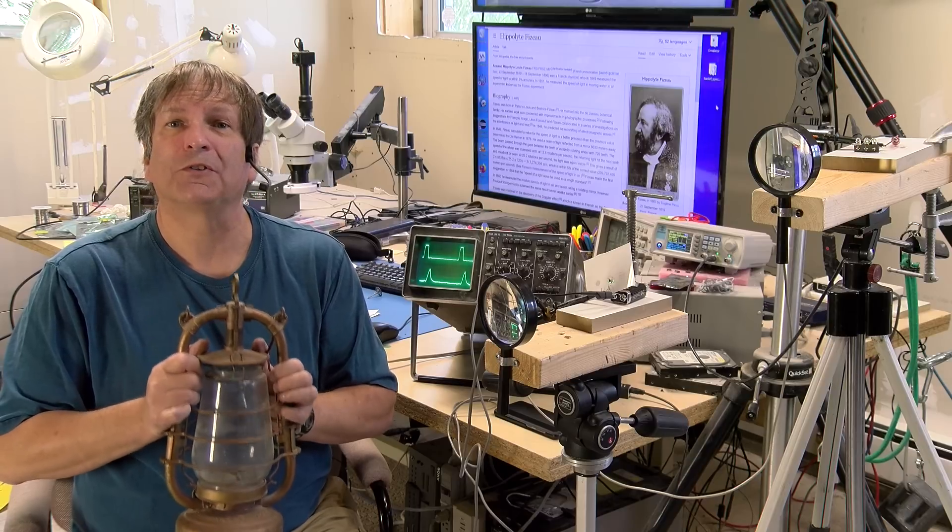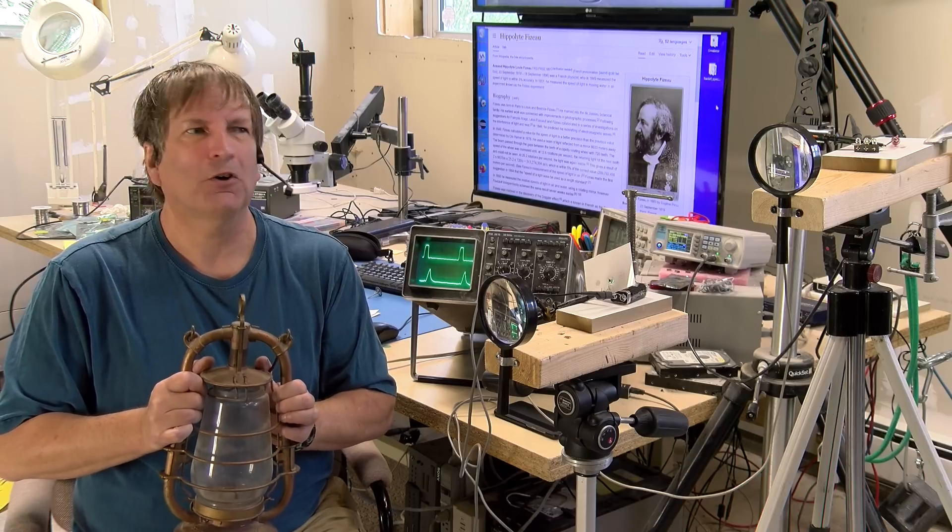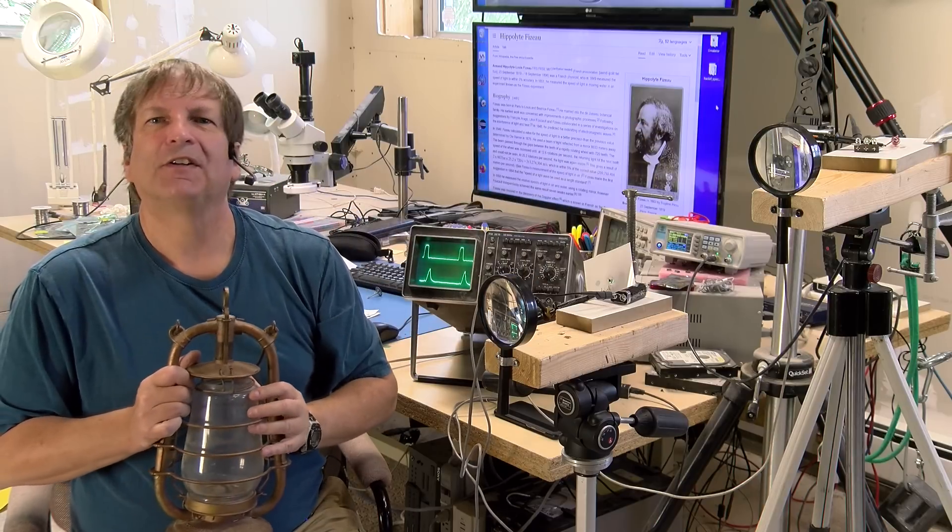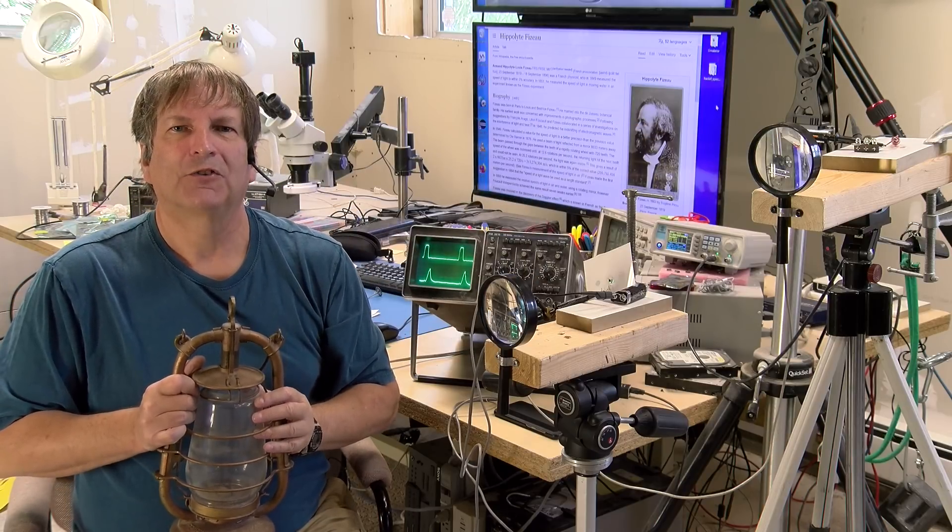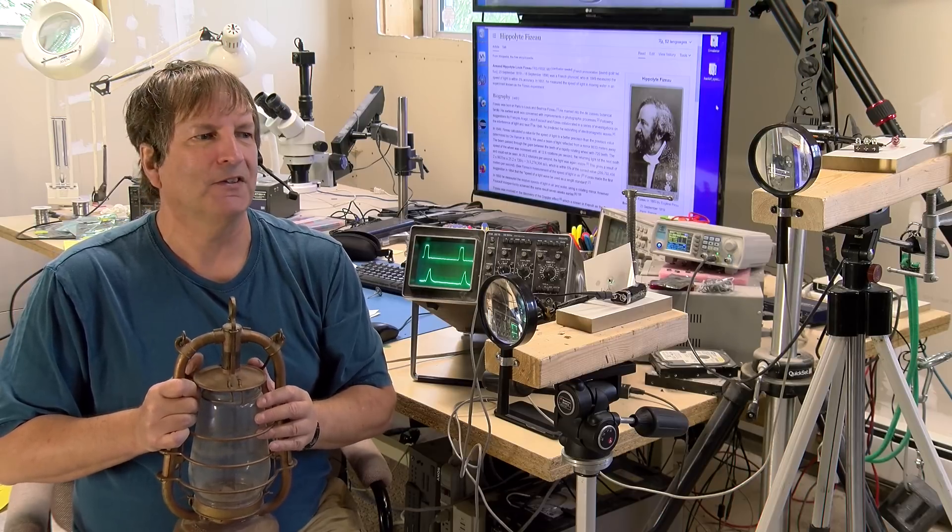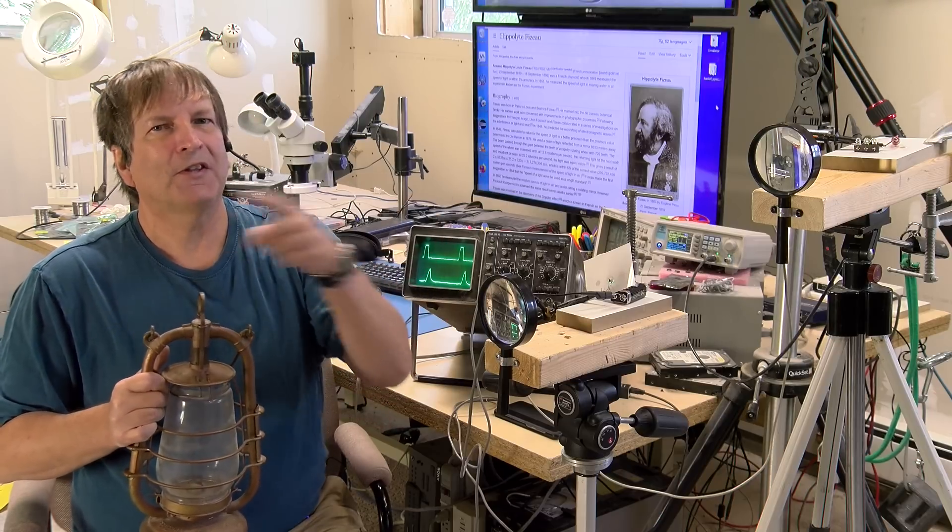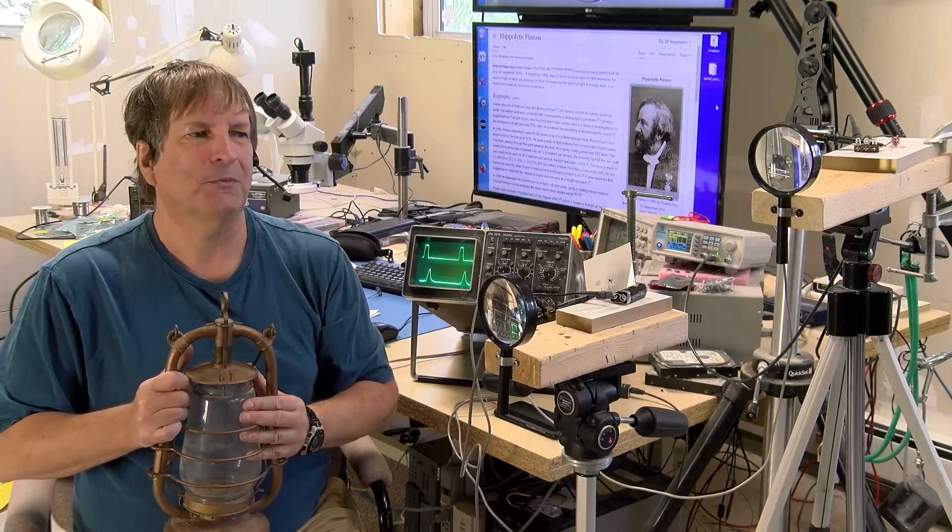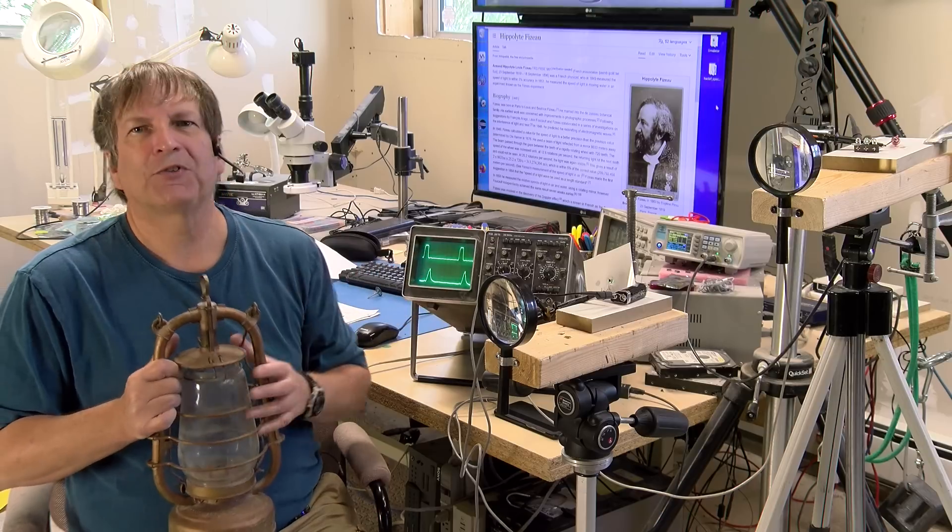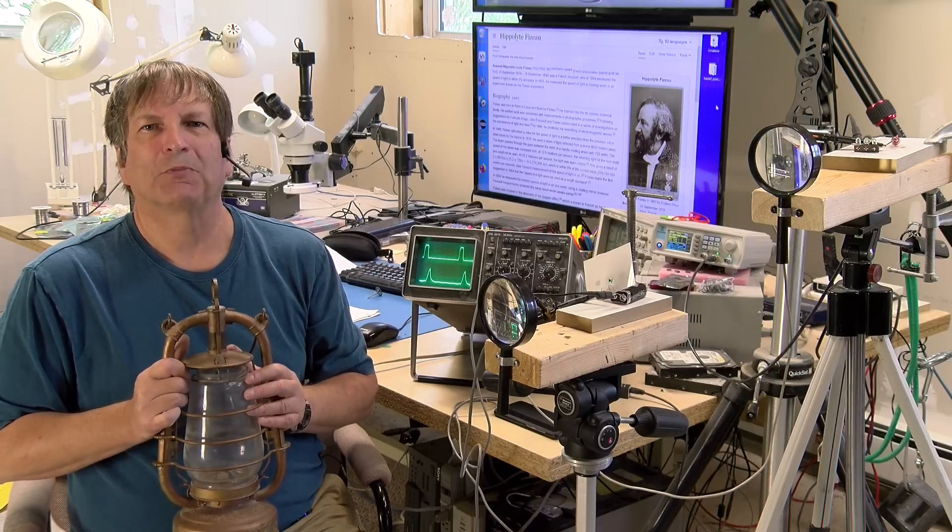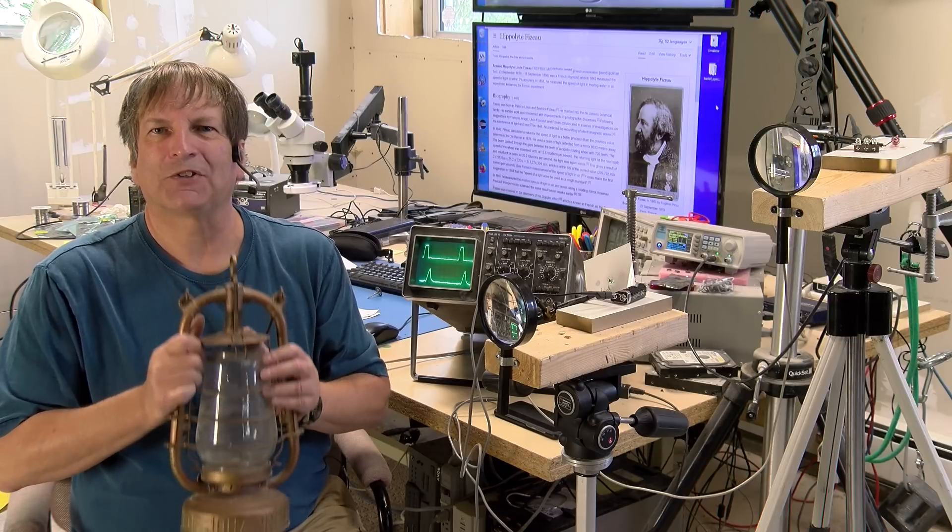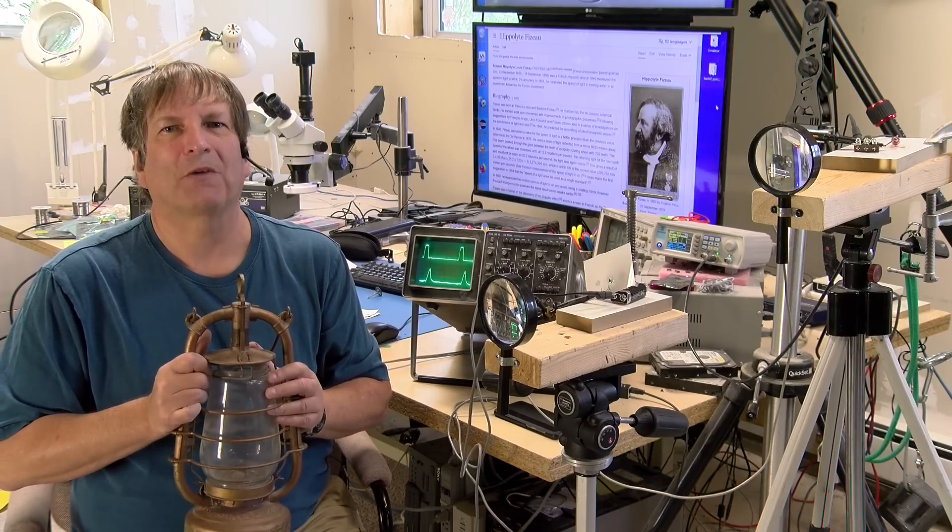Instead of a high-speed spinning cogwheel, we're going to use a laser diode that will be turned on and off about a million times a second. We're going to send the beam to the other end of the basement and then receive it back with a photodiode and display the results on an oscilloscope screen and hopefully calculate the speed of light. Let's take a quick look at the experimental setup.